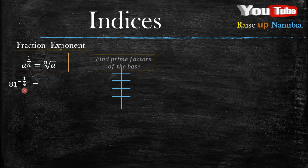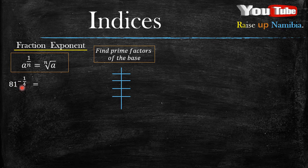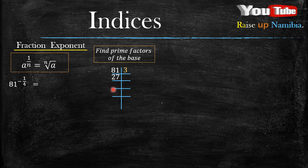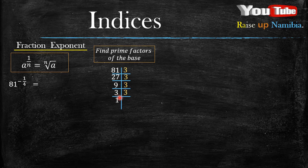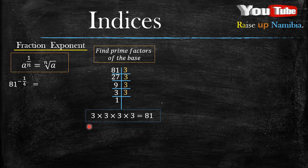Even though we have a negative fraction as an exponent, we still find the prime factors of the base. Our base is 81. We write 81 down and divide by 3 — we get 27. Divide 27 by 3, we get 9. Divide 9 by 3, we get 3. Divide 3 by 3, we get 1. We have four 3s, meaning 3 multiplied by itself 4 times gives 81. In exponential form, this is 3 raised to the power 4. Write it in exponential form, put it in brackets, and bring your exponent, which is negative 1 over 4.